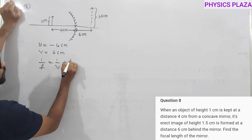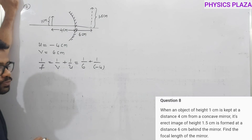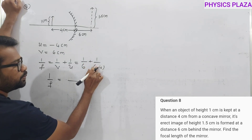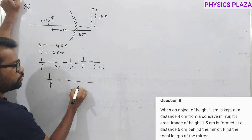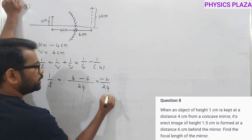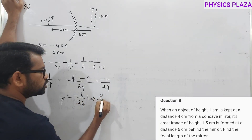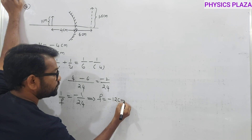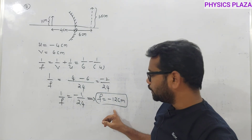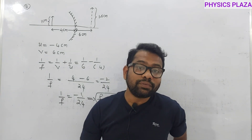Using 1/f = 1/v + 1/u: 1/f = 1/6 + 1/(−4) = 1/6 − 1/4. Taking LCM of 24: 1/f = 4/24 − 6/24 = −2/24 = −1/12. Therefore f = −12 centimeters. Mathematically this confirms the concave mirror's focal length is negative. Note that the given object height and image height were excess data not needed for this calculation.